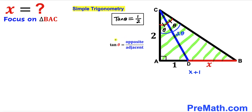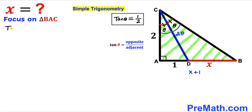Recalling once again the trigonometric ratio tangent equals opposite divided by adjacent — for right triangle BAC, side AB is our opposite and side AC is our adjacent. So tangent of 2 theta equals X plus 1 divided by 2. I'm going to label this as equation number 1.